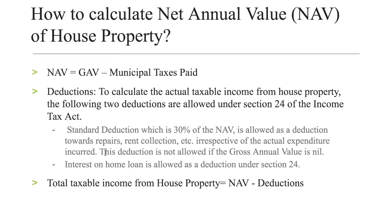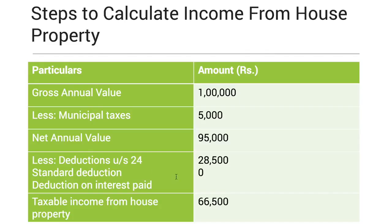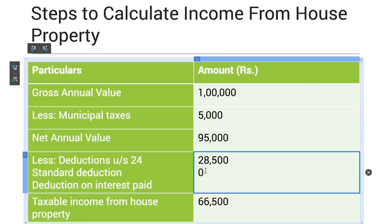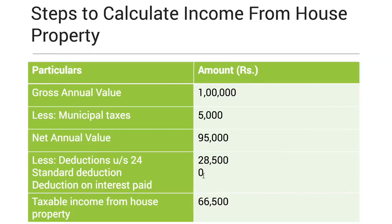There are some limits and criteria for this deduction. If the house is rented out, the calculation is different; if you are using the house for self-purpose, the calculation is also different — those details will be covered in a separate video. For now, assume the home loan interest is zero, because in this example the house was purchased using your own money with no home loan.